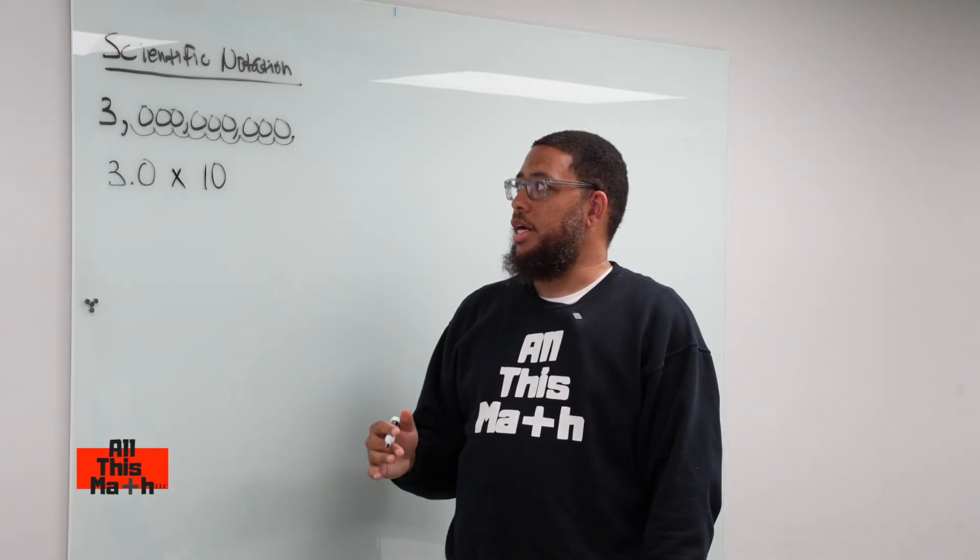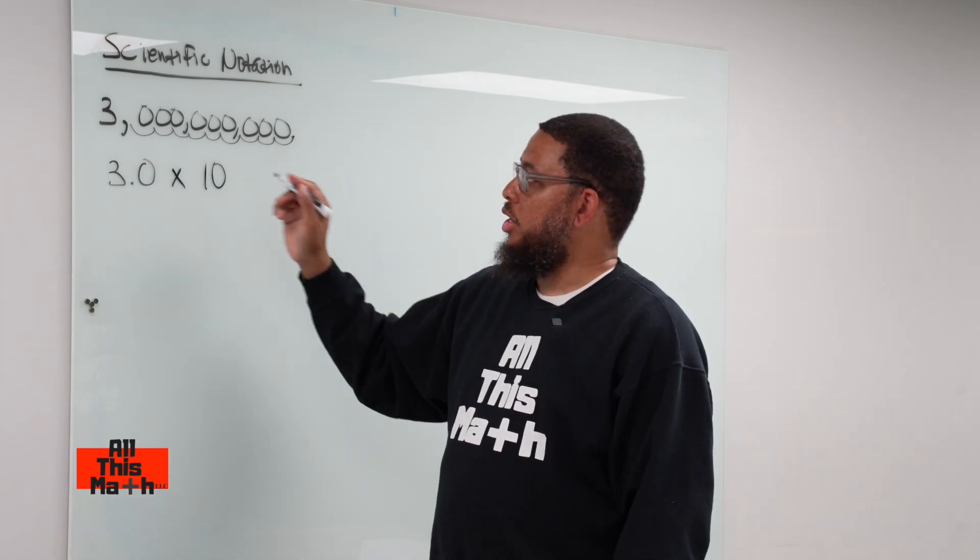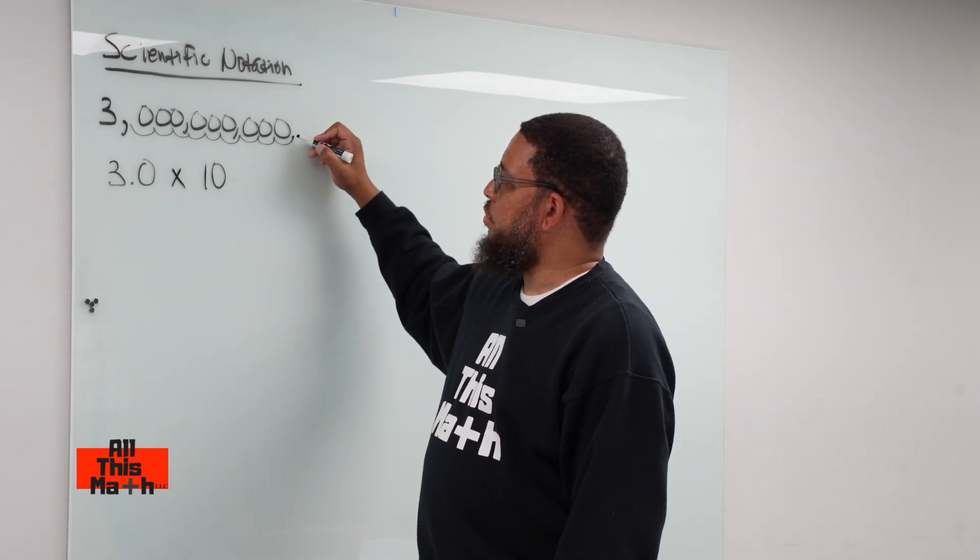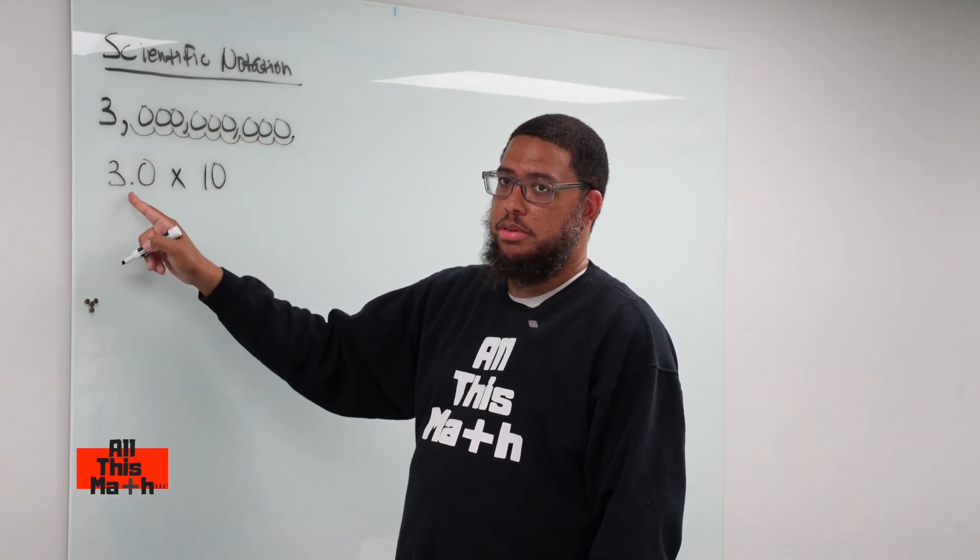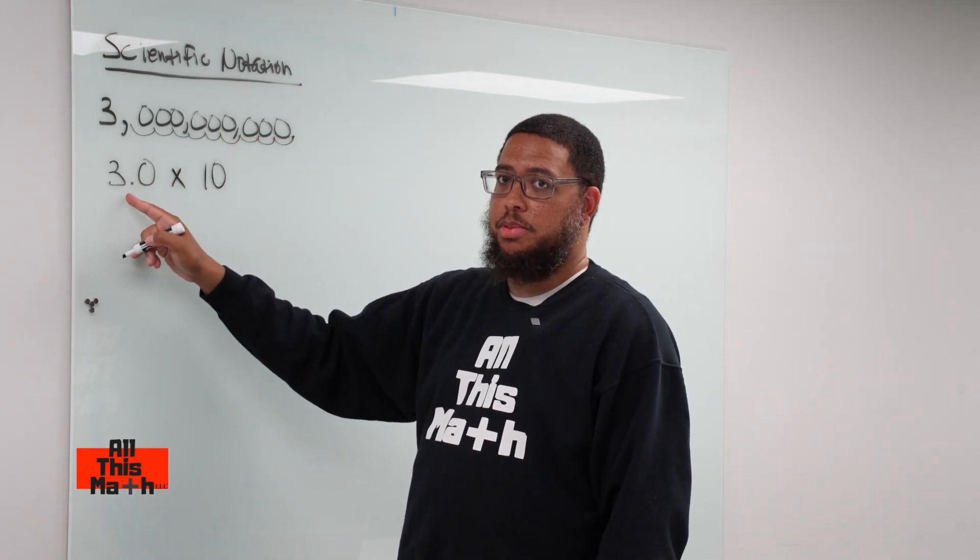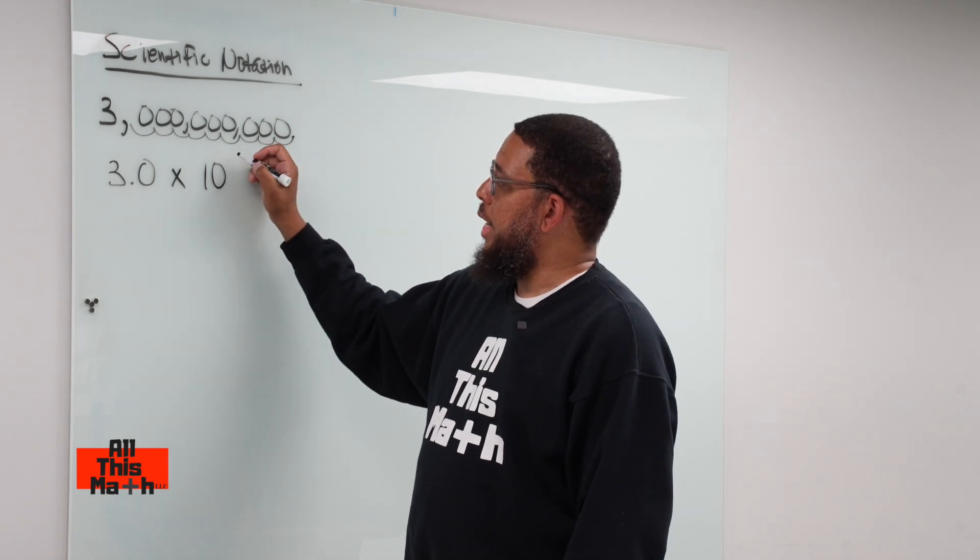Now, this is how I know what the exponent is going to be. The exponent is going to be a nine because I had to move the decimal point nine spaces to create this number.